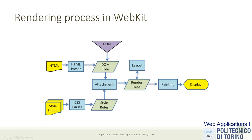This looks like a static process, but in reality the JavaScript code may change the DOM at any time through the API. You can also change the style rules. Every time we change the DOM through the API, all this process needs to be recomputed and redone so that the display updates immediately. These are the entry points where our JavaScript programs change the DOM, and the browser immediately reacts, re-renders everything, and recomputes the styles according to the modification of the DOM.